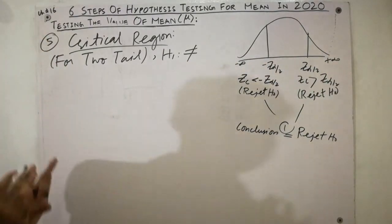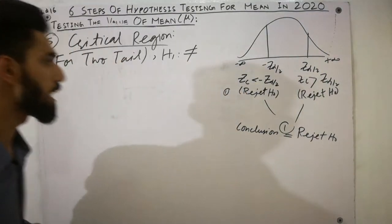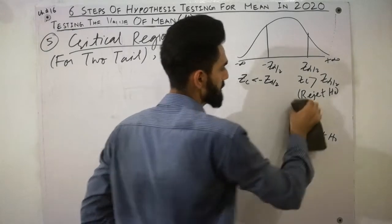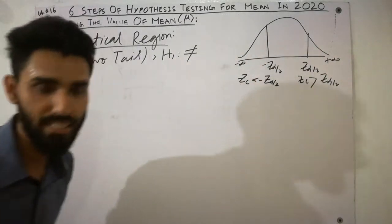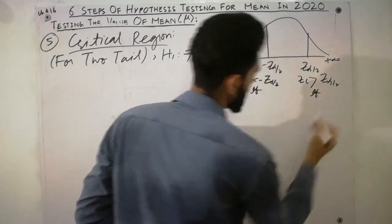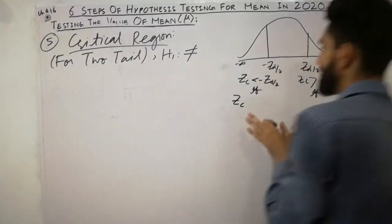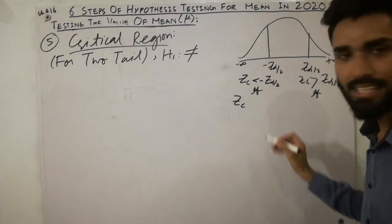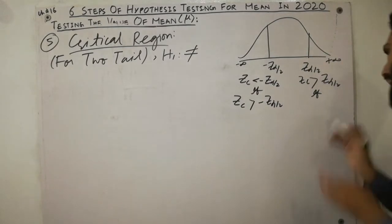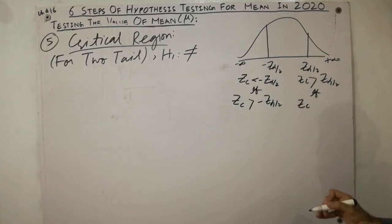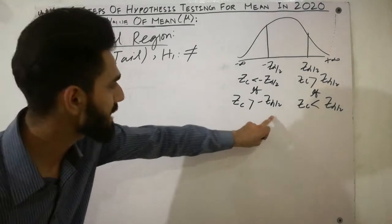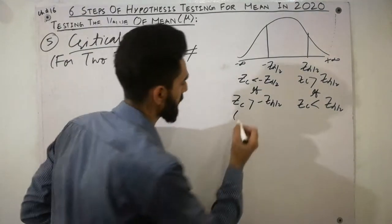Now the second scenario: if Z-calculated is greater than minus Z-alpha/2 and Z-calculated is less than Z-alpha/2 — meaning the calculated value falls between the two critical values — then the conclusion is accept H-naught.